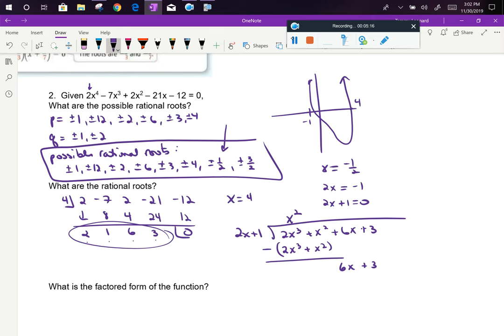So to get 2x to turn into 6x, that would add a 3. So 6x plus 3, if I subtract this, I get a remainder of 0. So I've confirmed that x equals negative a half is also an actual rational root.